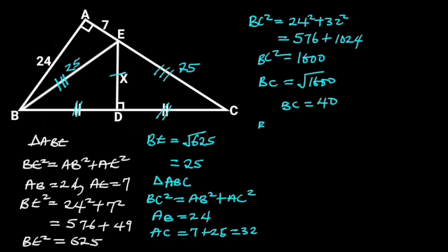And it follows that BD is equal to 20 and CD is equal to 20.